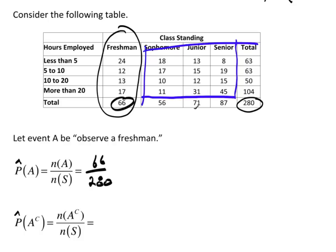If you add these up, you'll get 214. So the number of ways the complement can happen is 214. What's in the sample space? 280.